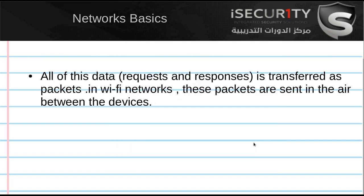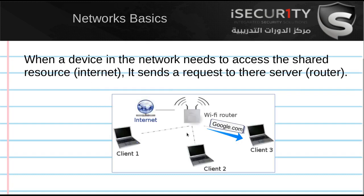All of this data — requests and responses — is transferred through packets. You can imagine all these arrows are a number of packets being sent between the clients and the router. In Wi-Fi networks, these packets are sent into the air, so they're broadcasted. If you're within range of these packets, you can just sniff them, capture them, and read them, and you'll be able to see the information in there.